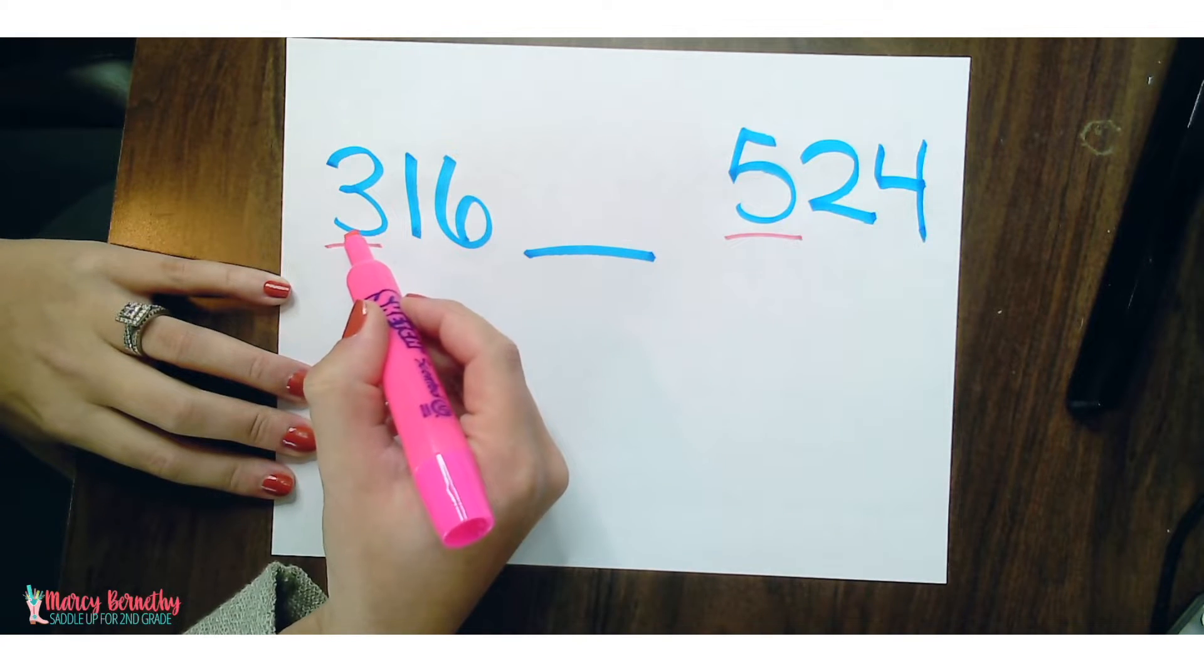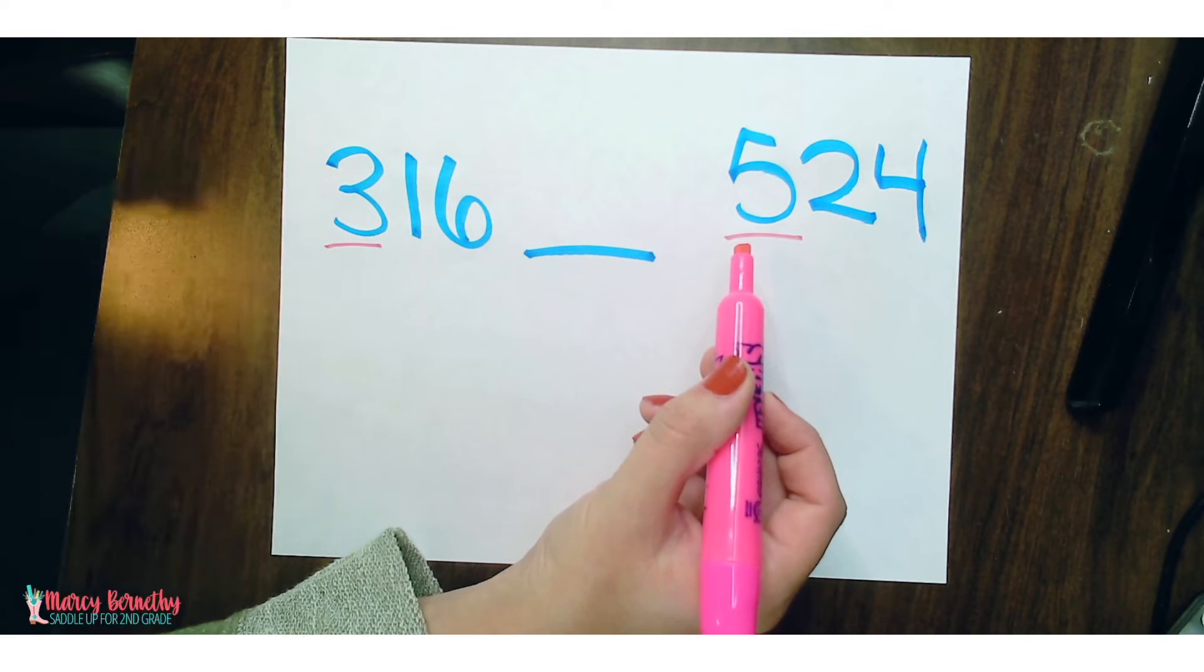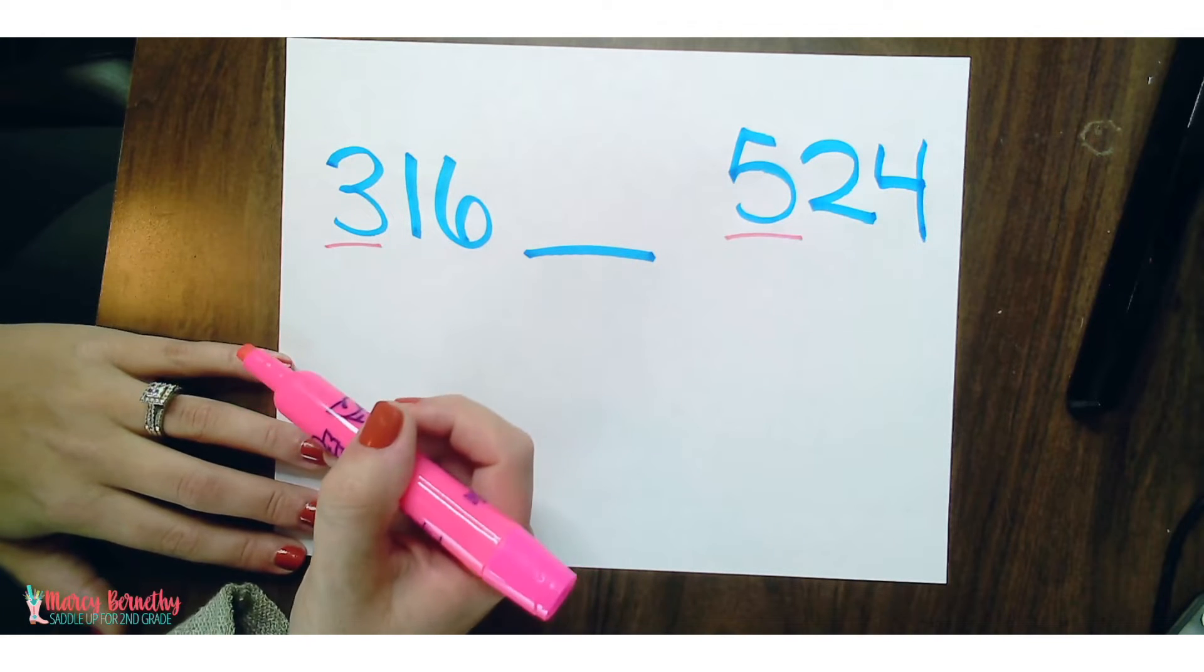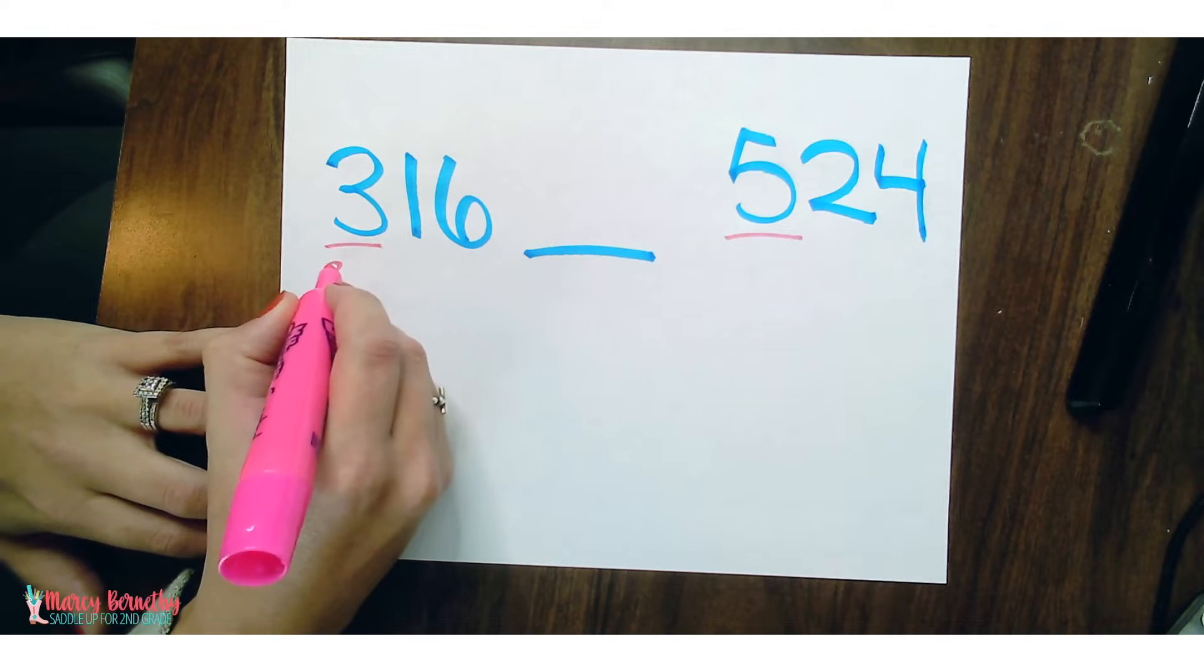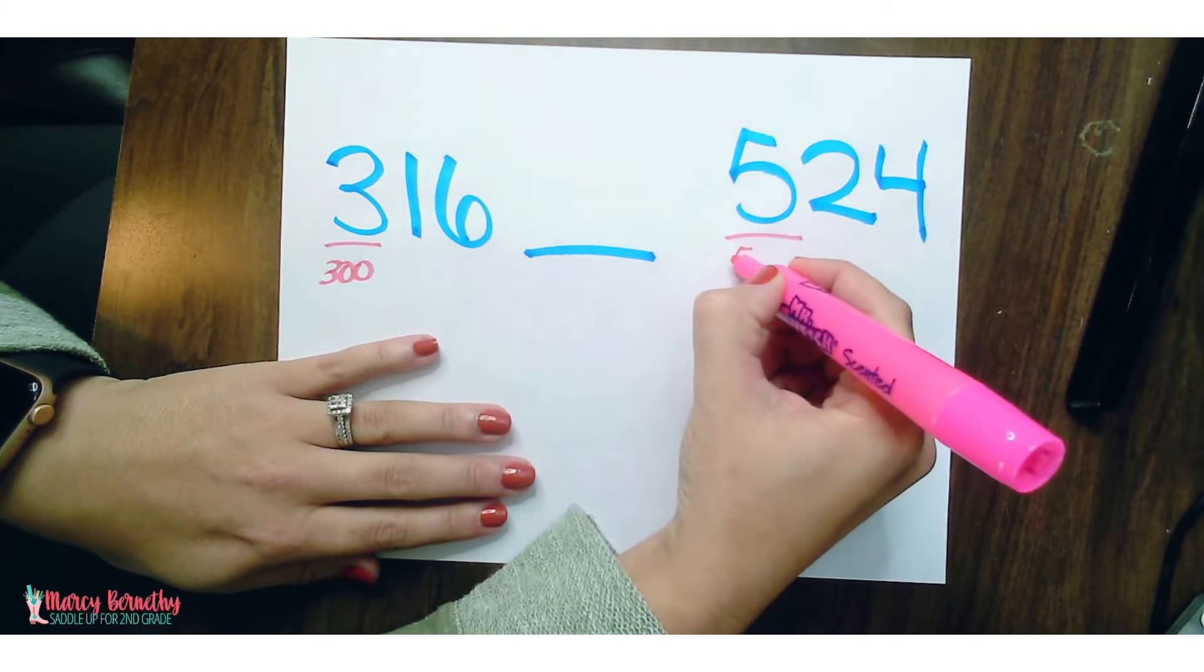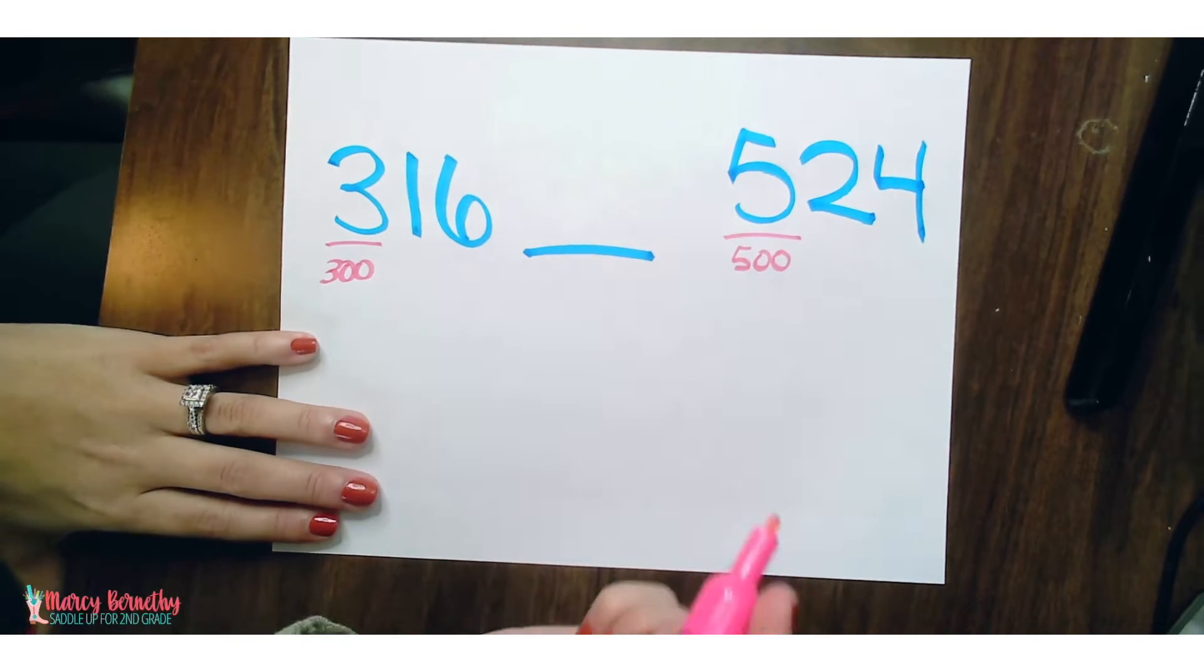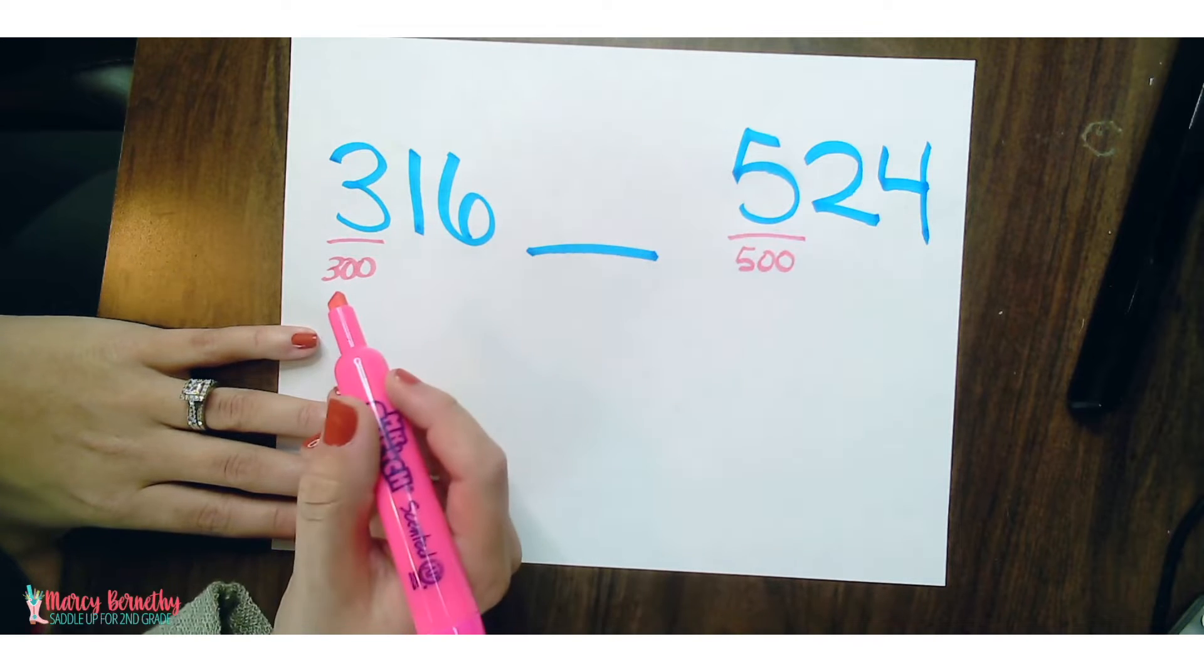But these numbers 3 and 5, they don't actually represent the number 3 and the number 5. Because of their place value, they're in the hundreds place. So our 3 represents 300 and our 5 represents 500. So we want them to be able to explain their thinking that they know that 524 is greater than 316.